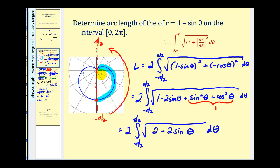This is the arc length of this curve from zero to two pi. Remember when we set this up, we did double it, so this is the total arc length from zero to two pi, or the entire curve. I hope this explanation was helpful. Thank you.